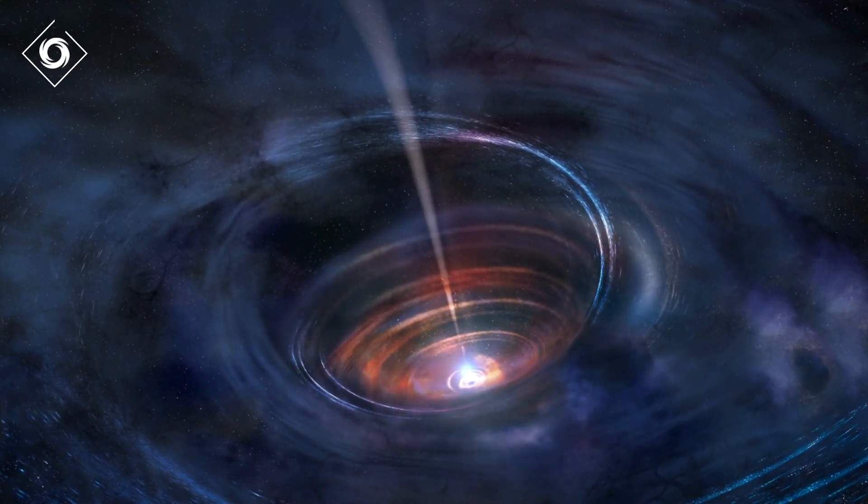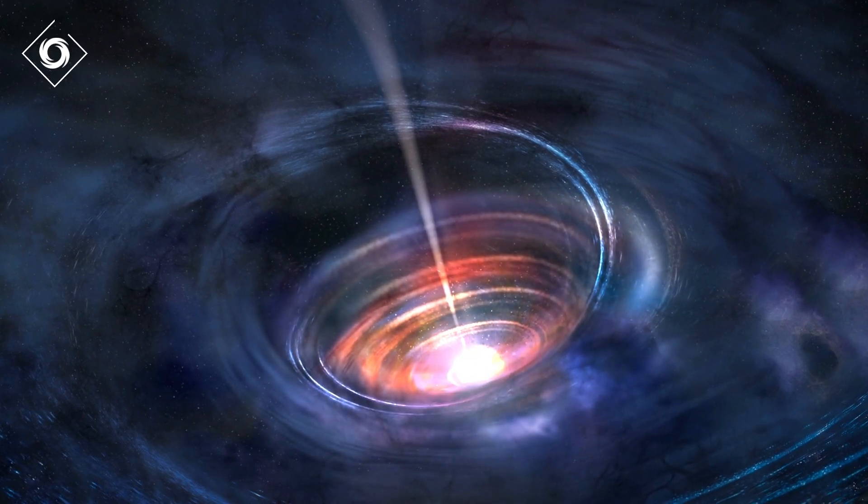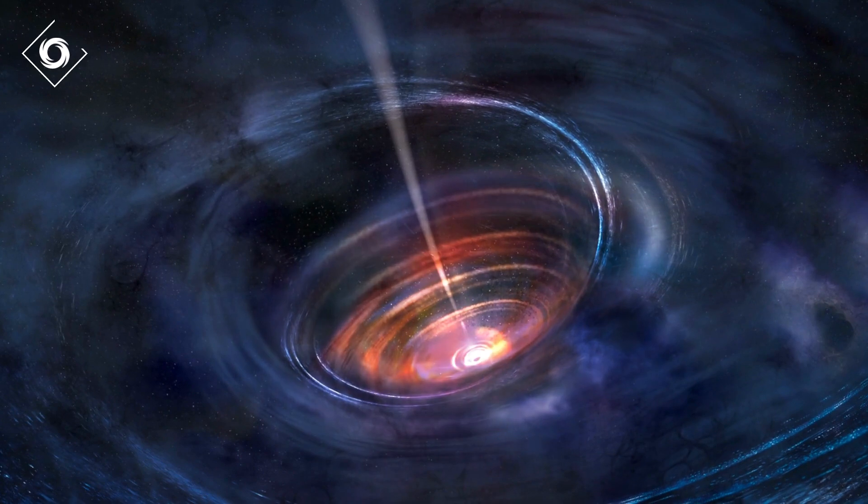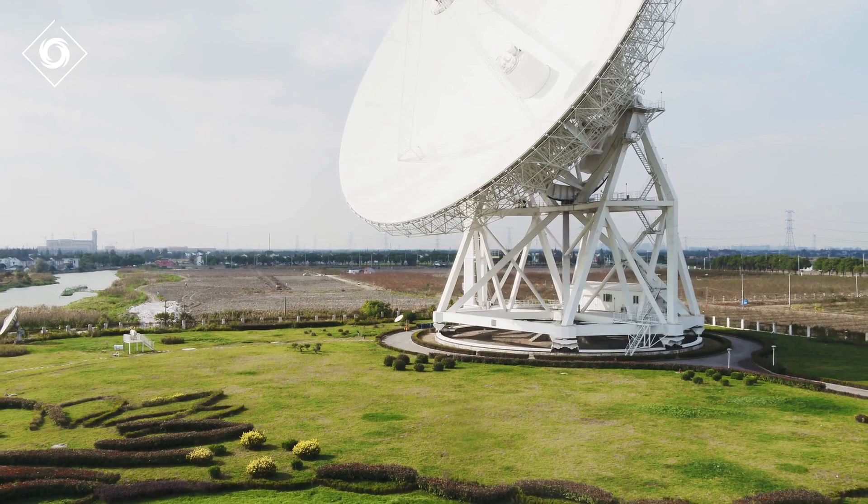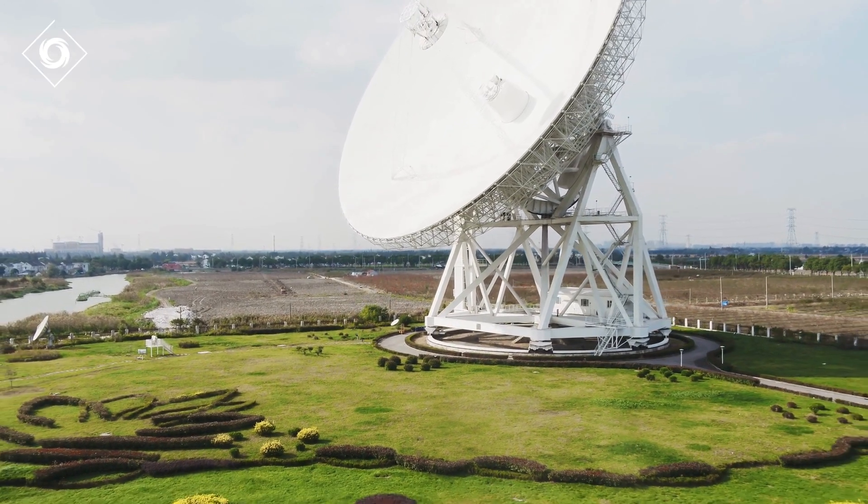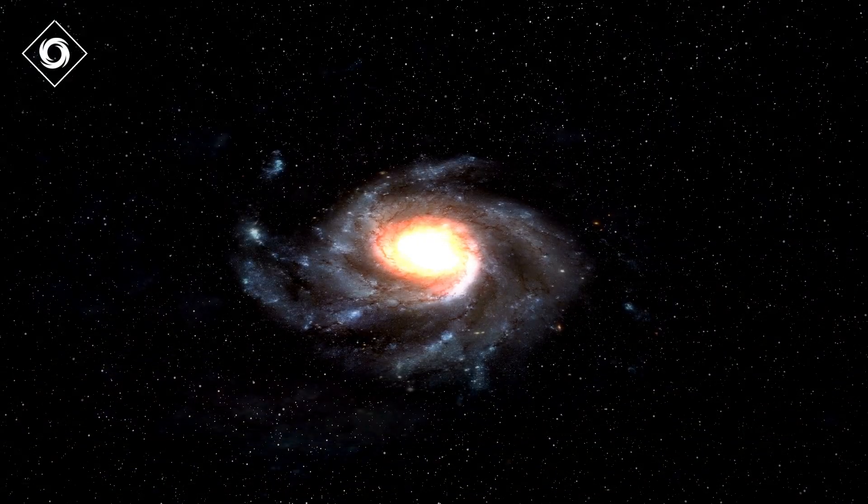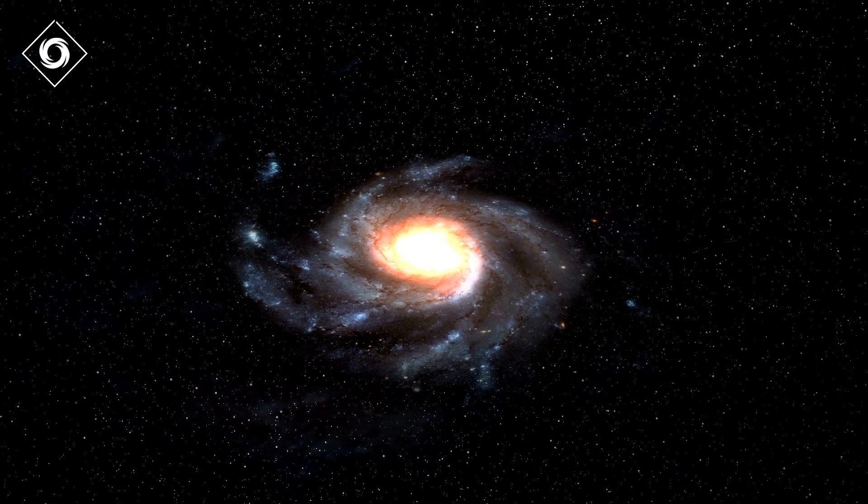Scientists have known about black holes for many years, but it wasn't until 2019 that they captured the first-ever image of one. The image was captured by the Event Horizon Telescope collaboration, and showed the black hole at the center of the M87 galaxy, which is 55 million light-years from Earth.